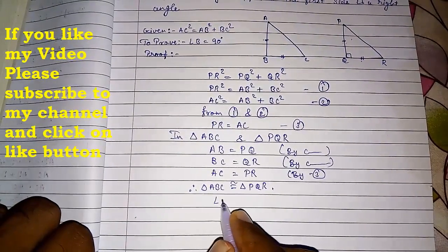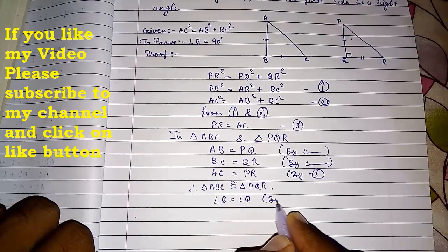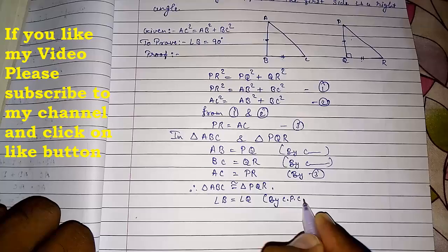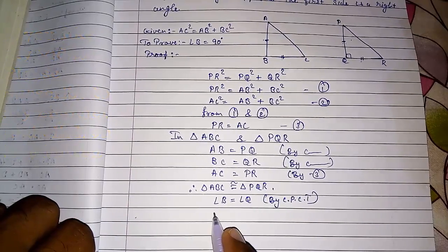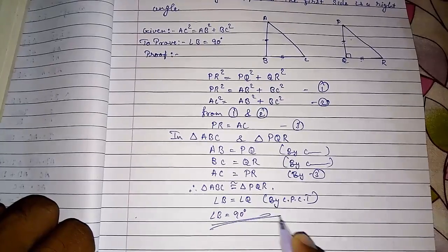So we can say angle B equals angle Q by CPCT, corresponding parts of congruent triangles. Therefore, if the angles are equal, angle B = 90 degrees. Hence proved.